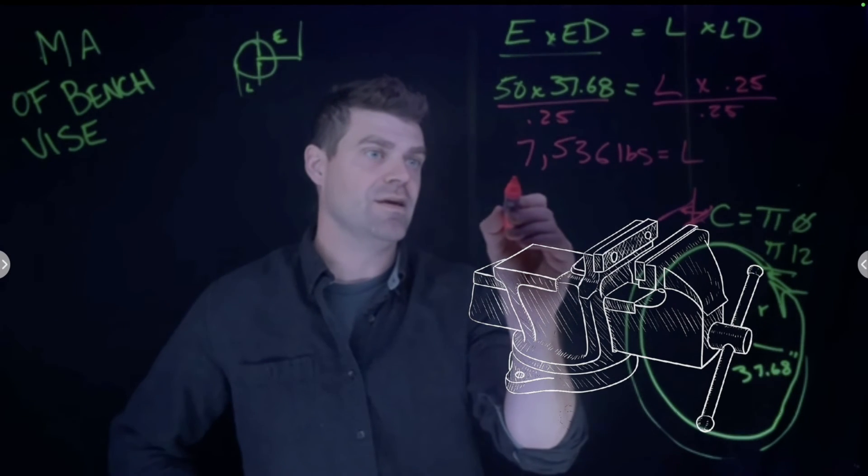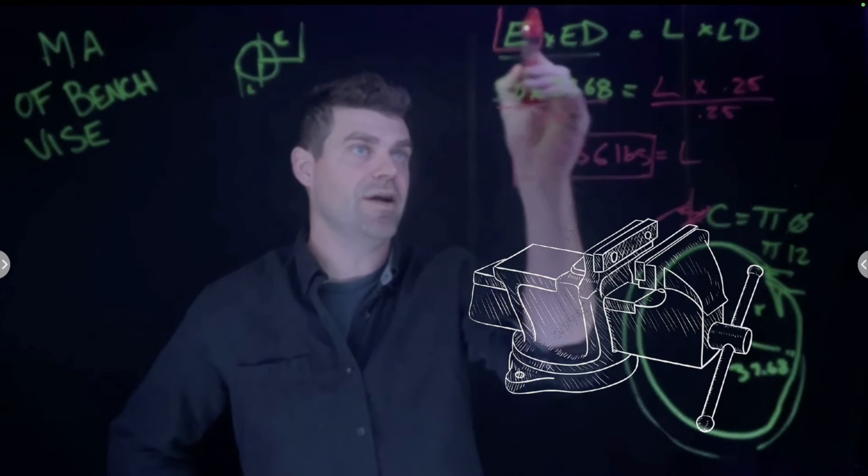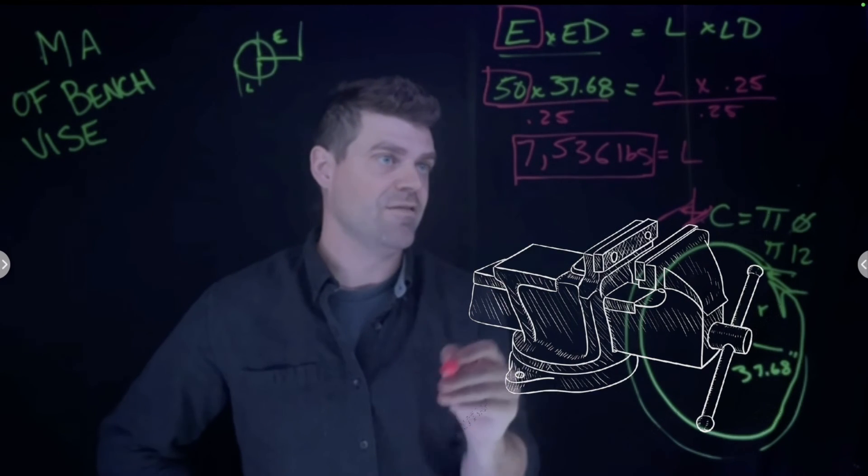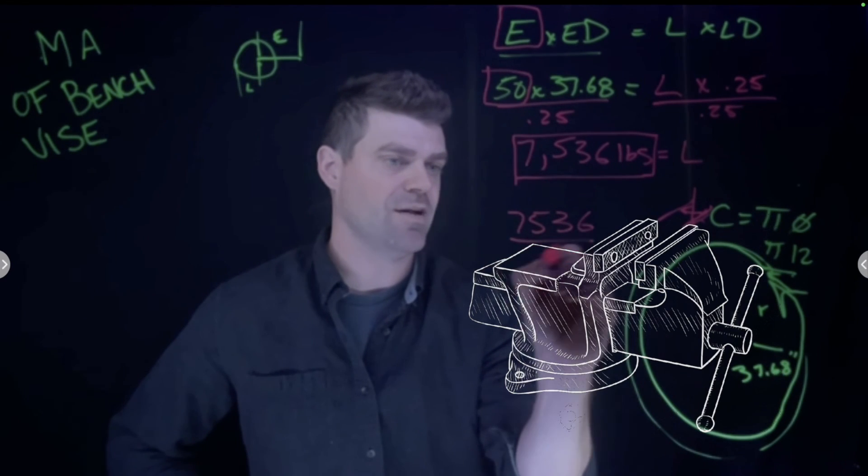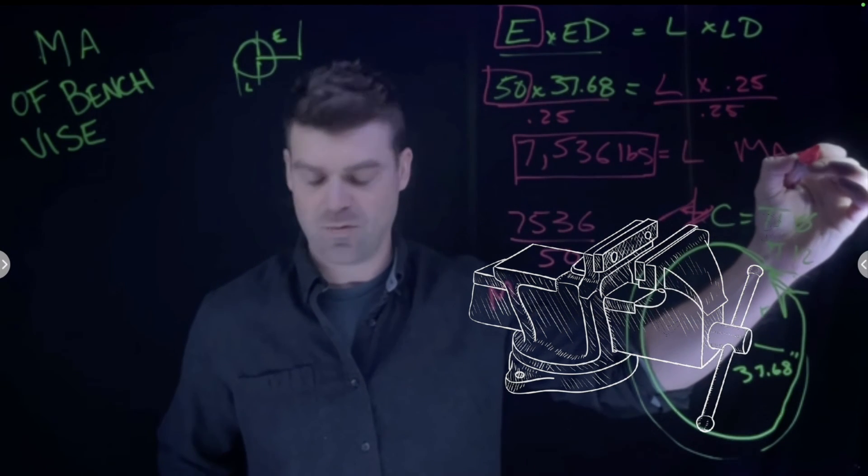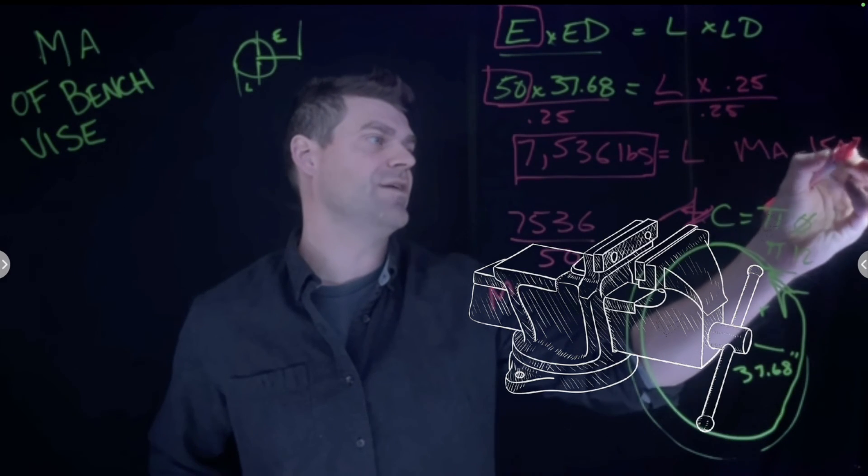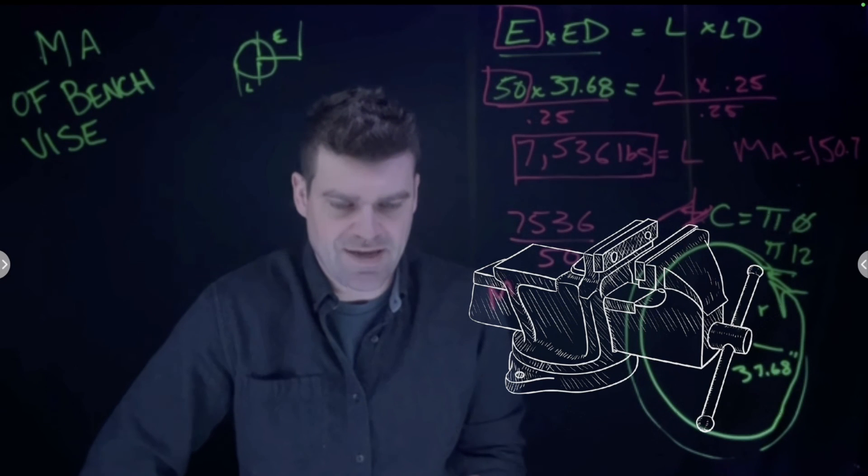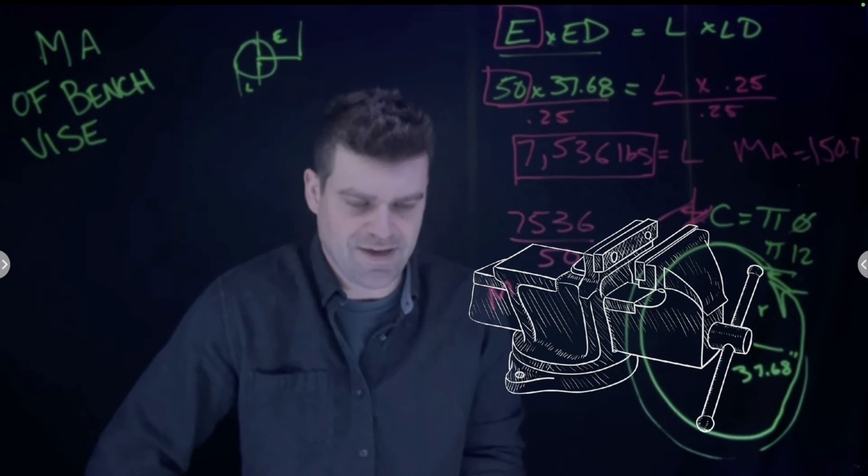The mechanical advantage would be the load divided by our effort, which is 50. So if we take 7,536 and divide it by 50, we have a mechanical advantage of 150.72, which is huge. So again, respect the vise, don't crush things, don't go crazy, don't bend the vise handles—you don't need to.